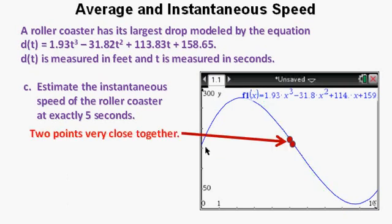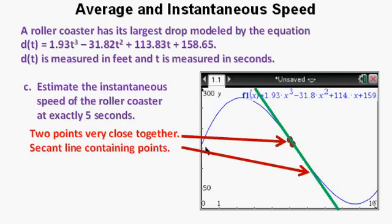But without calculus, we can make an estimate that is quite close by placing points very close together and finding the absolute value of the slope of the secant line containing these two close together points. Here are two points very close together on the graph. And here's the secant line containing these points.